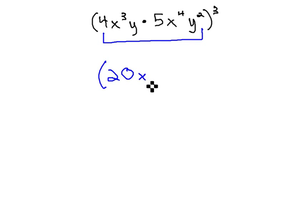On the x's, we have x cubed times x to the 4th. This is the product rule, where we add the exponents on the common base. 4 plus 3 is 7.